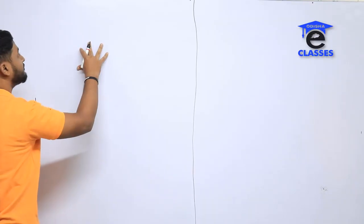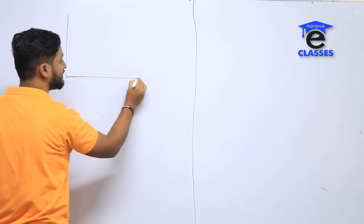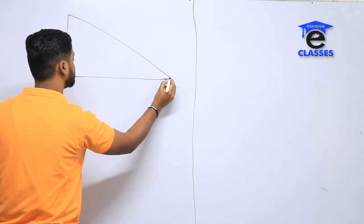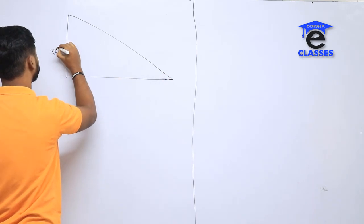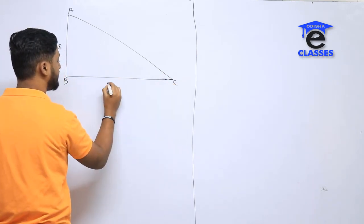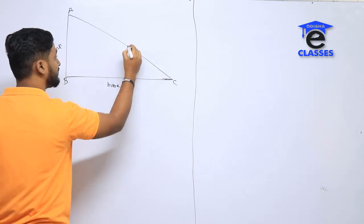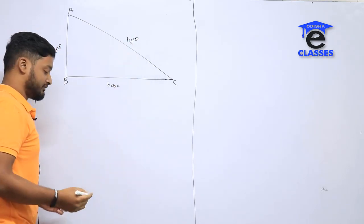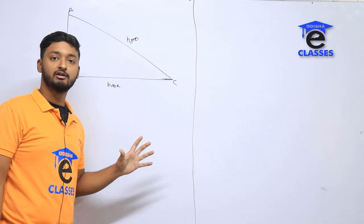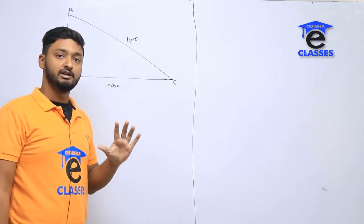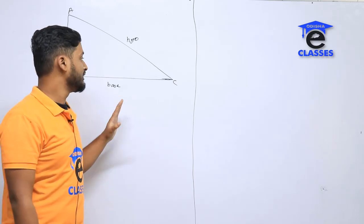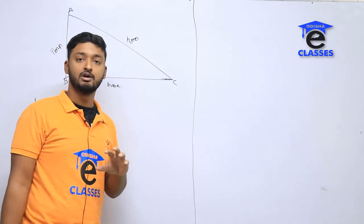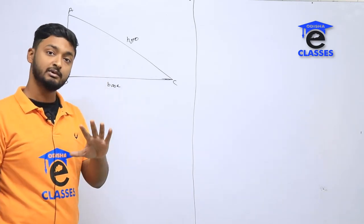I am going to show you a right angle triangle. A right angle triangle has a perpendicular, a base, and a hypotenuse. Today I am going to show you a trigonometric function. In trigonometry, we study vectors — vector addition, vector subtraction, vector resolution — and do trigonometry. Today we have to practice trigonometry functions.